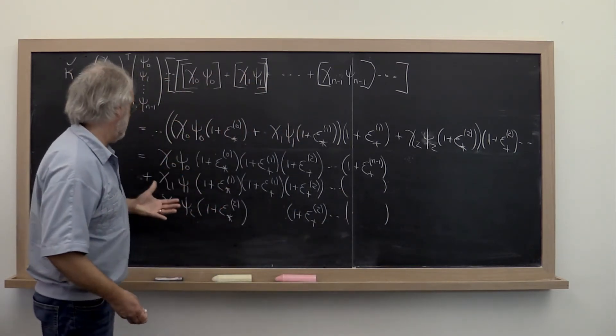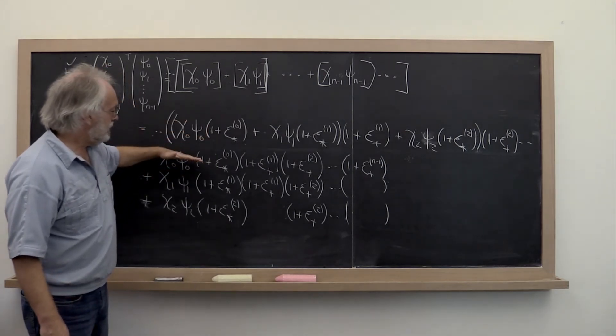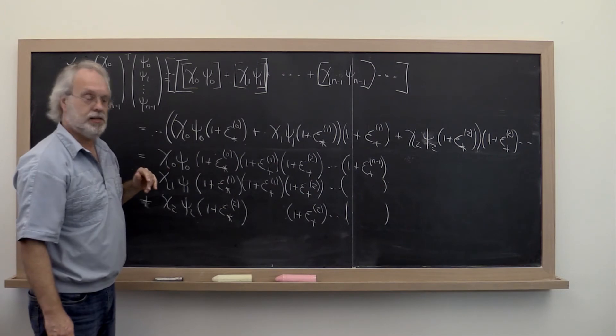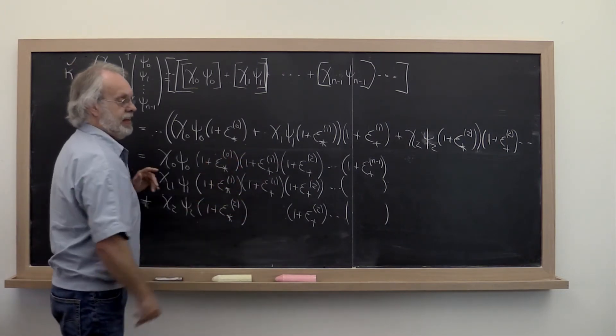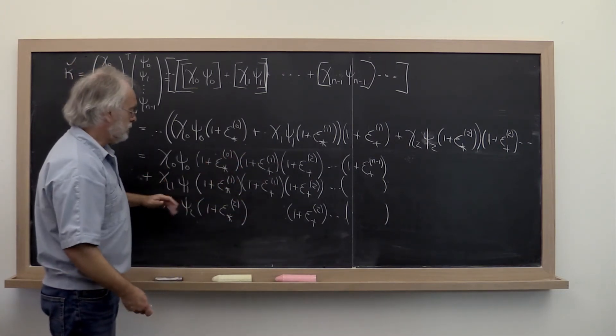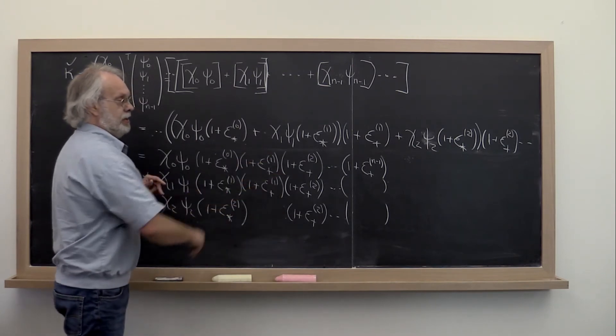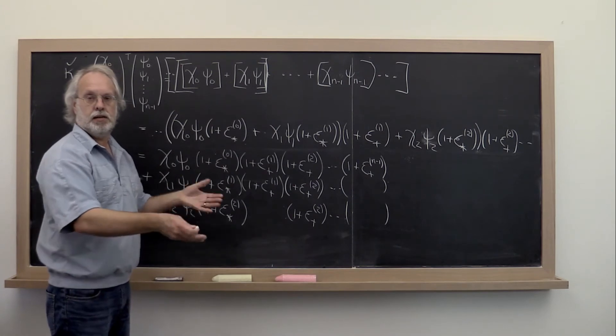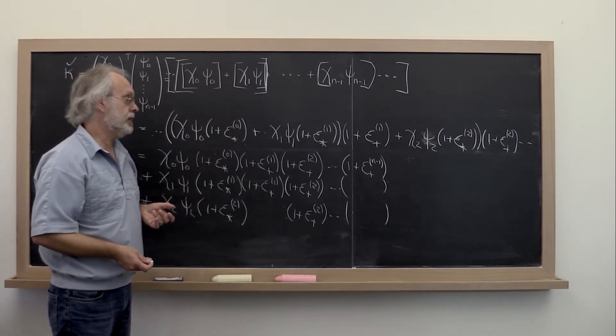The way to think about this is that this first term is hit by errors n times. The second term is hit by errors n times. The third term is hit by errors n minus 1 times. The next one by n minus 2 times, and so forth.